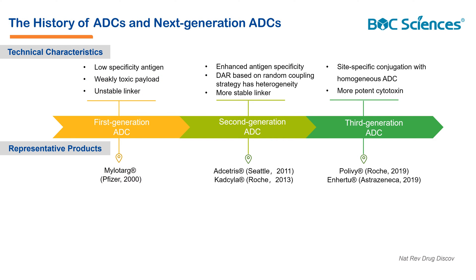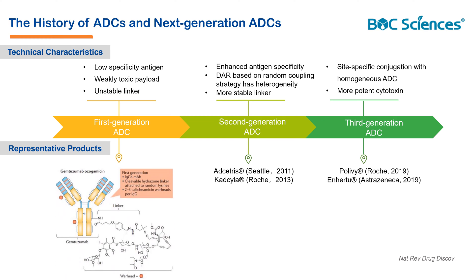Antibody drug conjugates have made considerable progress in the past decade. Among the first-generation ADC drugs, anti-cancer drugs such as mitomycin C, idorubicin, anthracyclines, n-acetyl-melphalan, adriomycin, vinca alkaloids, and methotrexate are mainly conjugated to mouse monoclonal antibodies via a non-cleavable linker. However, the first-generation ADC drugs possess strong immunogenicity and unstable linkers, often causing early toxin release in the plasma leading to severe toxic reactions. Additionally, the cytotoxins of the first-generation ADC are considered ineffective in killing tumor cells.